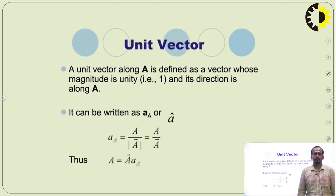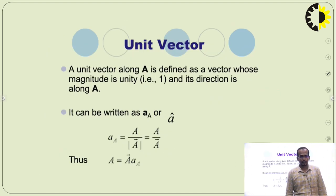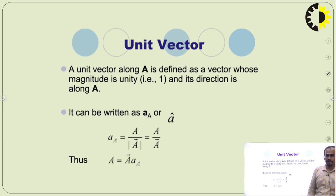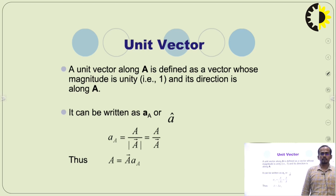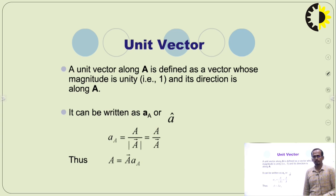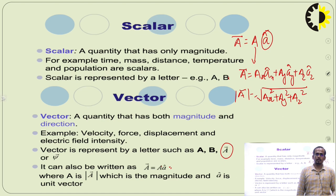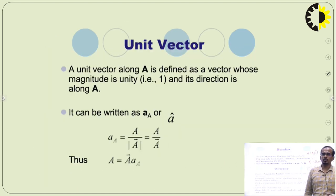What is a unit vector? A unit vector is a vector along vector A whose magnitude is unity and whose direction is along A. We can find the unit vector A-cap using the formula: A-cap equals vector A divided by mod of A.